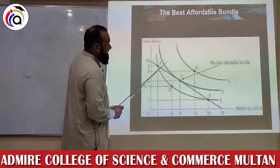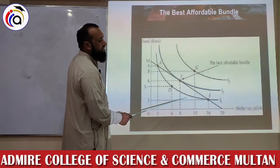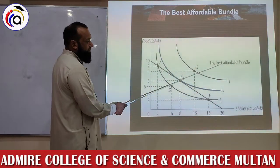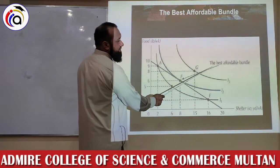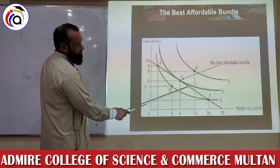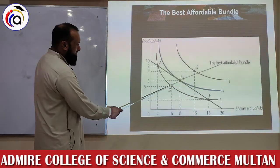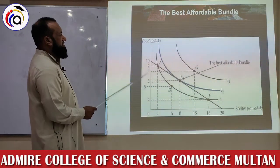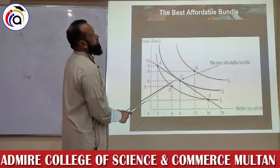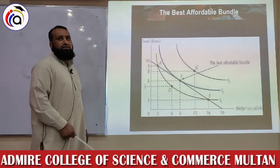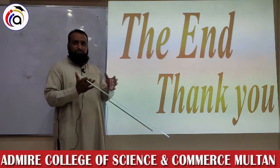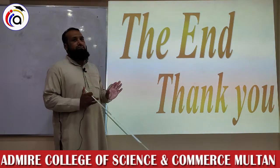When the consumer moves to point F on indifference curve I2, his satisfaction increases. The consumer desires maximum satisfaction, so point F is called the best affordable bundle. At this bundle, the consumer purchases, say, 8 units of good X and 6 units of good Y. This is his best choice — the best affordable bundle for the consumer. This is how consumer equilibrium is established. Explain this diagram and consumer equilibrium will be confirmed.